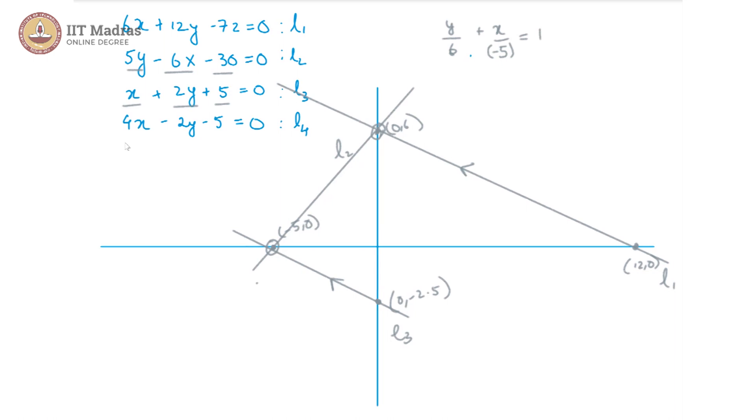Lastly, let us reduce our L4 into the intercept form. We get 4x - 2y = 5. Therefore, x/(5/4) + y/(-5/2) = 1. So when we look at this, 5/4 is a quantity just a little greater than 1, so it is probably somewhere here, and 5/2 is 2.5 basically. So -2.5. So this and this. Thus we have something like this happening.